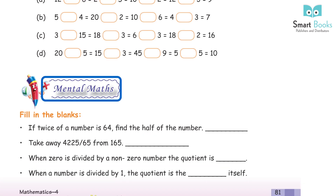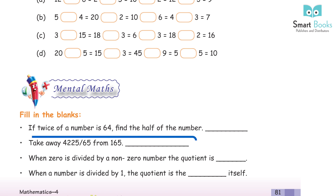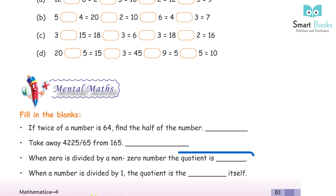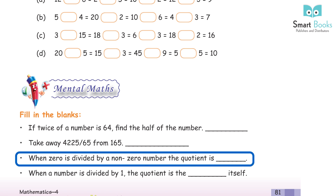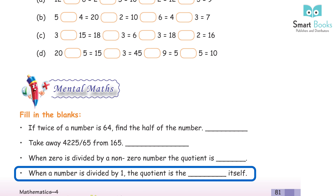Mental maths — fill in the blanks: if twice a number is 64, find the half of the number. Take away: divide 4225 by 65. When 0 is divided by a non-zero number, the quotient is? When a number is divided by 1, the quotient is the number itself.